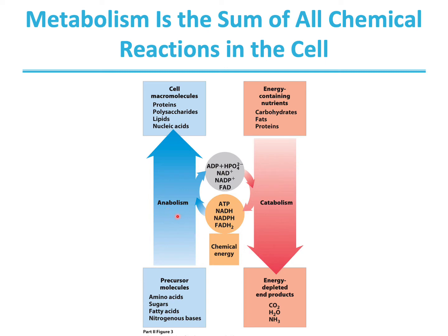Anabolism, on the other hand, which is also called biosynthesis, converts precursor molecules into larger macromolecules. In the process, it uses the energy stored in ATP, NADH, NADPH, and FADH2. The big picture is that energy relationships exist between both anabolism and catabolism, and the energy carriers used in anabolic pathways are actually made in catabolic pathways.